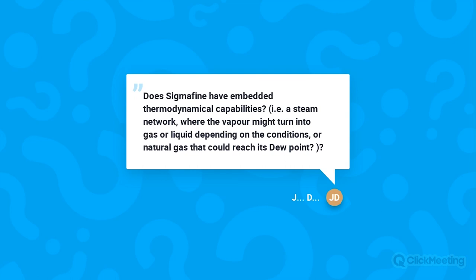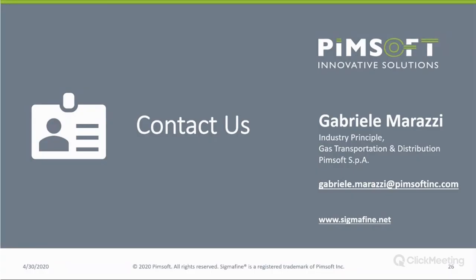Does Sigma Fine have embedded thermodynamic capabilities — for example, a steam network where vapor might turn into gas or liquid depending on conditions, or natural gas that could reach its dew point? Yes, we have an extension that can be implemented. On behalf of all the participants and PIMSOFT, we thank you for taking time to participate in our webinar and share your knowledge. Anyone interested to continue this discussion on mass balance and metering can contact Gabriele directly. We'd like to thank everybody for joining us. It does not look like we have any other questions, so we will be closing this down. Thank you very much. Bye-bye.